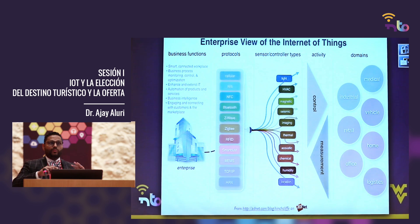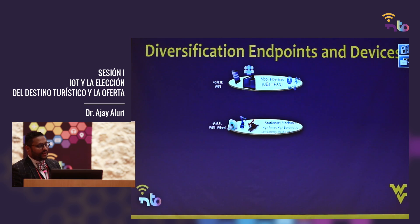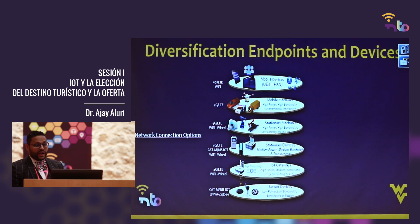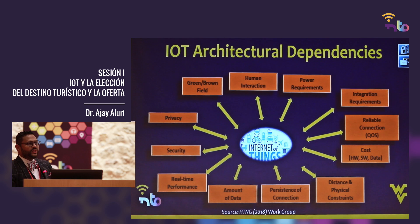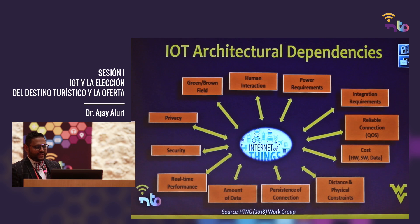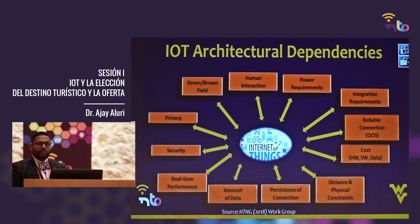Looking at endpoints and devices: mobile devices use 4G, LTE, and Wi-Fi and are here to stay. We also have stationary machines with high power and high bandwidth, IoT gateways, sensor devices with medium bandwidth, and mobile machines and beacons. There are also important dependencies to consider: level of human interaction, power requirements, integration requirements, reliable connection, cost, distance and physical constraints, amount of data, security, privacy, whether it's a new or old property (greenfield vs. brownfield), and real-time performance requirements.